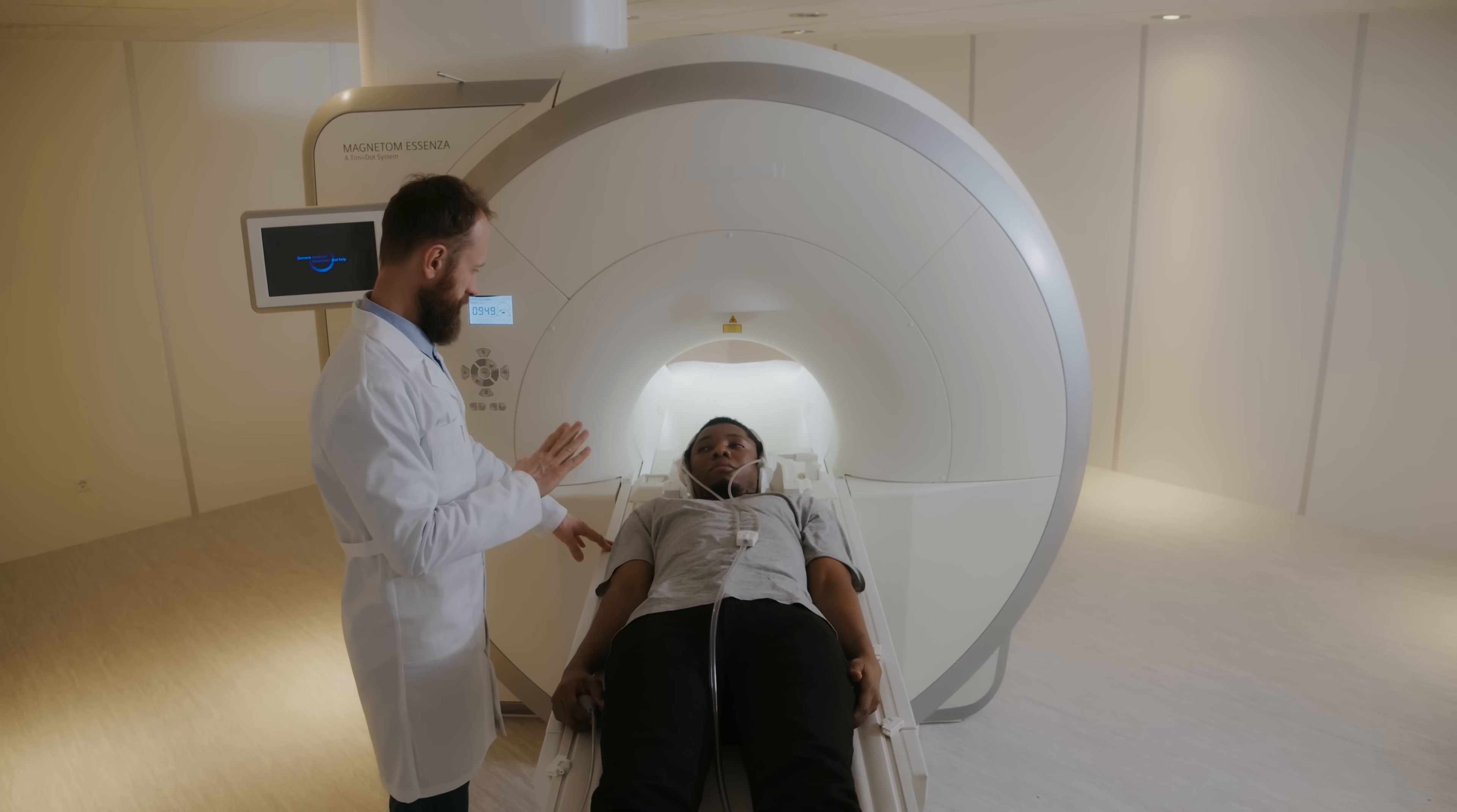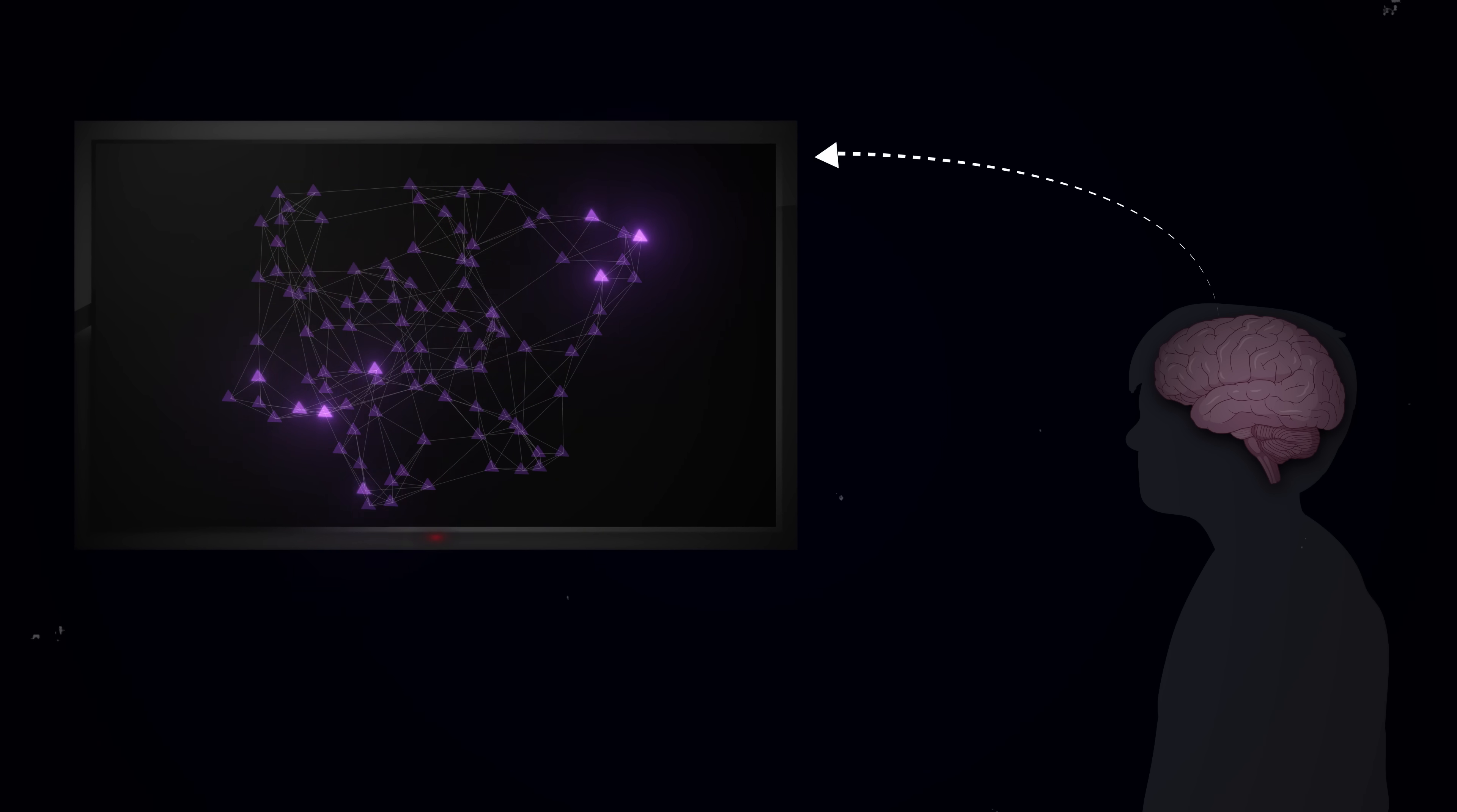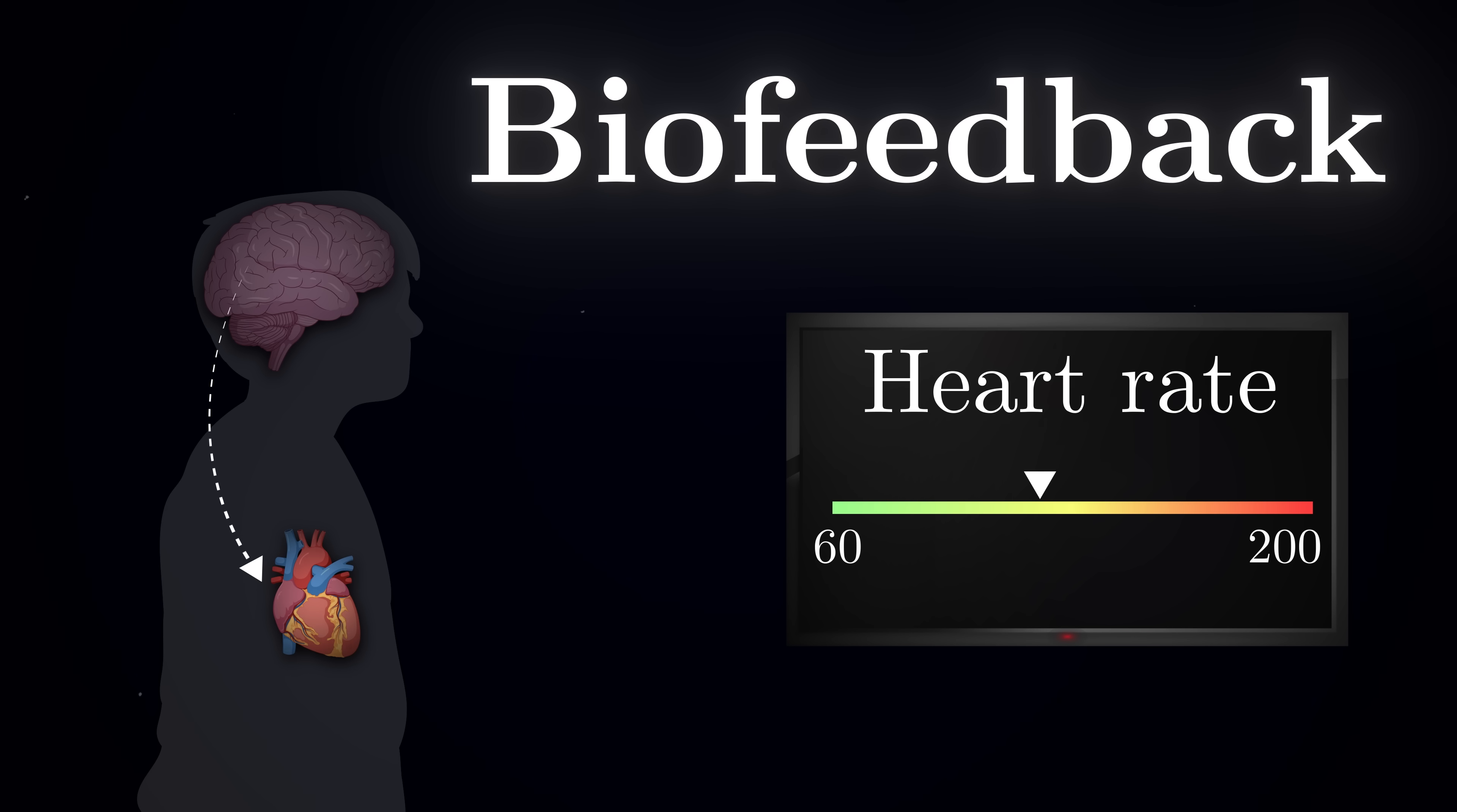Instead of trying to design behaviors that might or might not result in certain brain activity patterns we're interested in, what if we make specific neural sequences themselves the very goal of learning. Here is the key idea. What if we could show people their own neural activity in real time? Now, this isn't as far-fetched as it sounds. Think about controlling your heart rate or breathing. Normally, these processes happen automatically, without conscious control. But when you hear or see your heart rate on a monitor, your brain gains a remarkable ability to control it voluntarily. This is an example of biofeedback, a phenomenon when you observe some kind of signal from your body in real time, your brain learns how to influence it. And the same principle could work for neural activity itself.